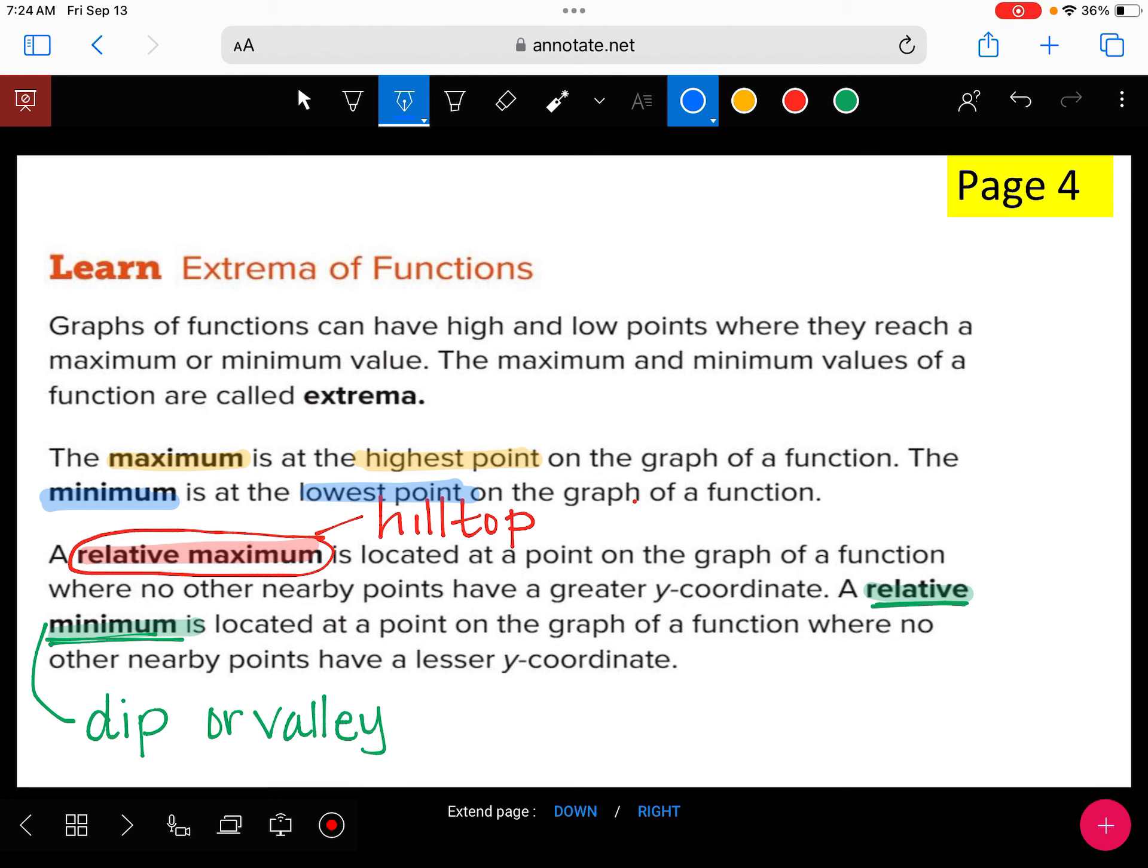All right, so there's four. I'm going to go ahead and write them over here, too. So the first one, we talk about the maximum. That's your highest point. If it's a minimum, that's your lowest point.